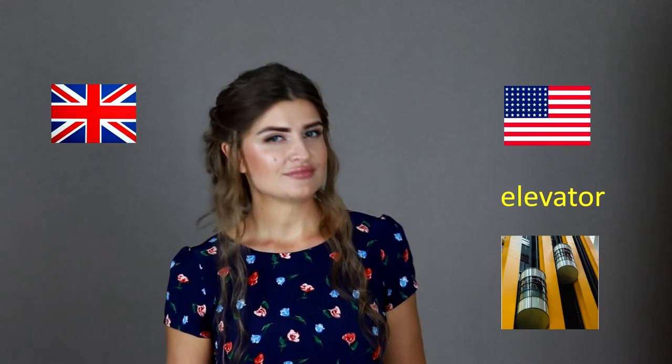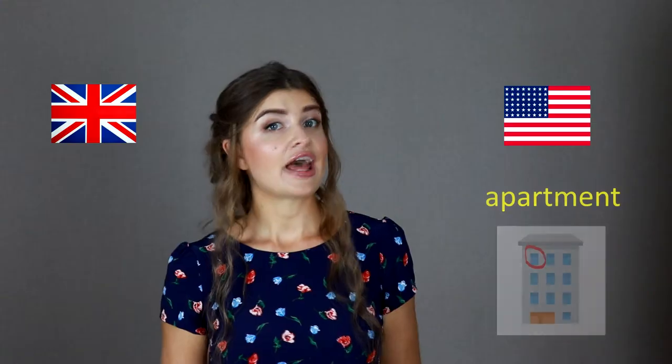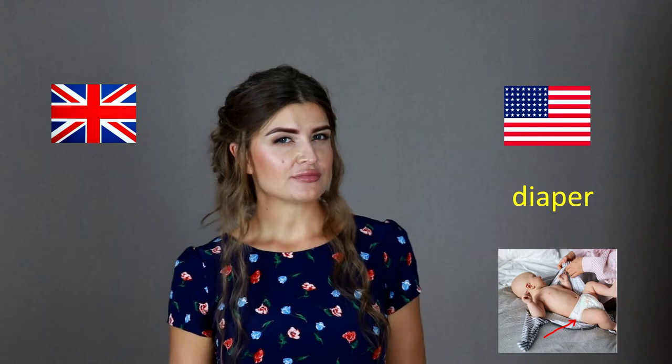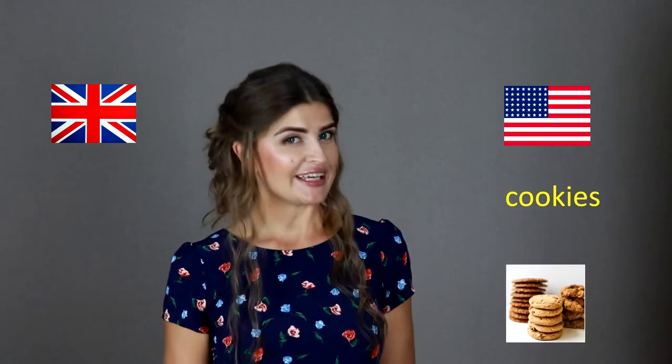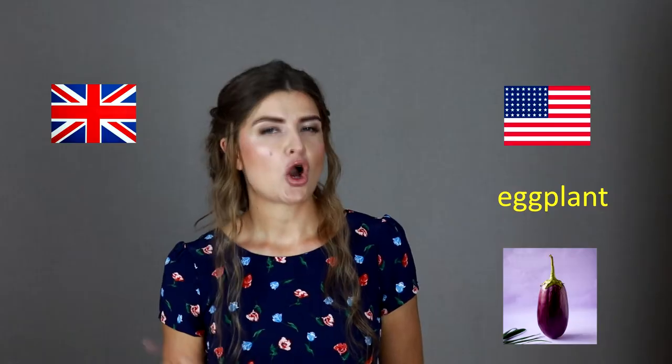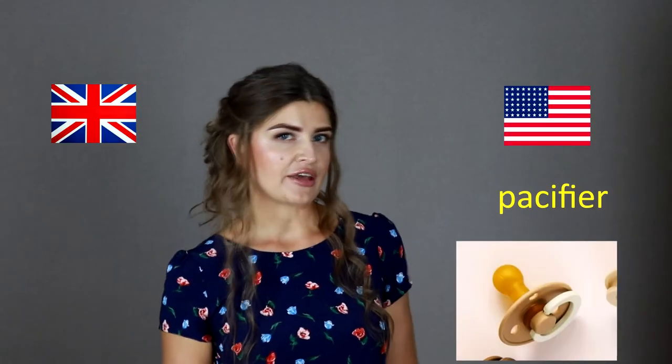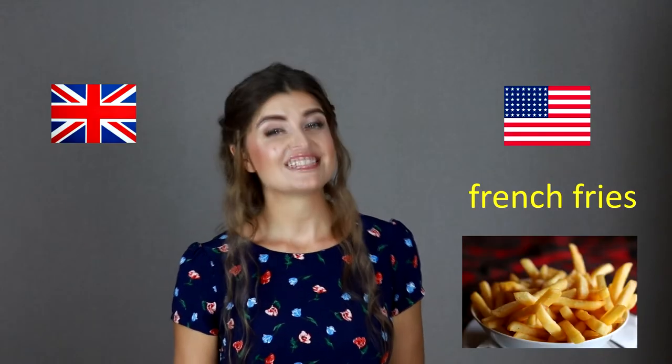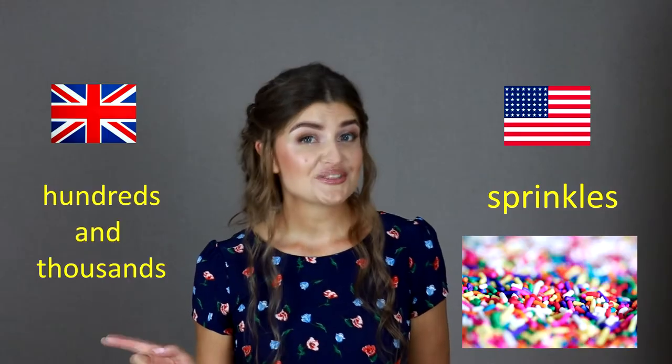Now let's have a look at some words that have different names in American and British English: subway / underground, cell phone / mobile phone, elevator / lift, apartment / flat, closet / wardrobe, diaper / nappy, cookie / biscuit, sneakers / trainers, eggplant / aubergine, pacifier / dummy, french fries / chips, sprinkles / hundreds and thousands, broil / grill.